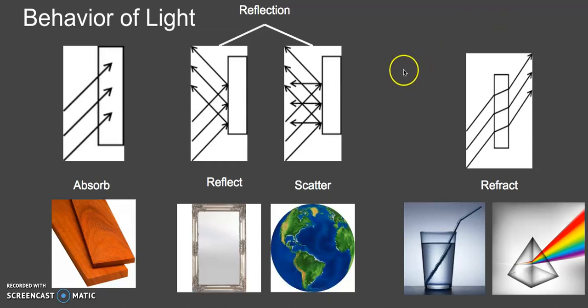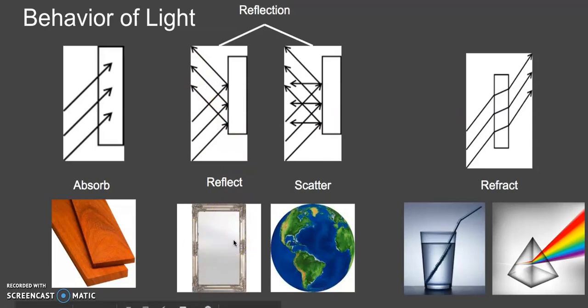We're going to start with reflection. Reflection means that these incident rays — rays that are coming in from a light source — bounce back at a 90 degree angle and they are in exactly the same order, so we get a reflection. This happens off of things like mirrors or entirely smooth lakes. It's also how we see color.